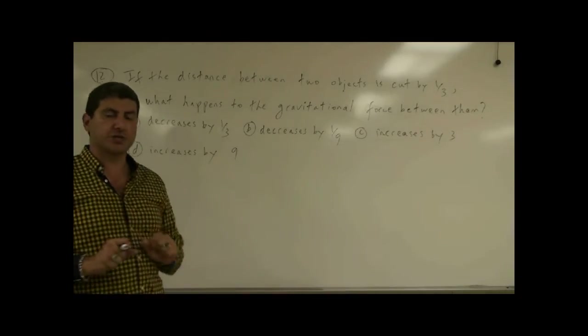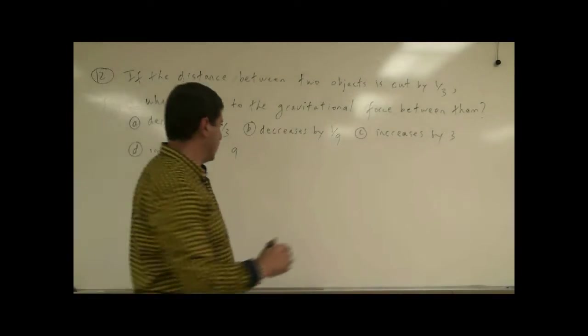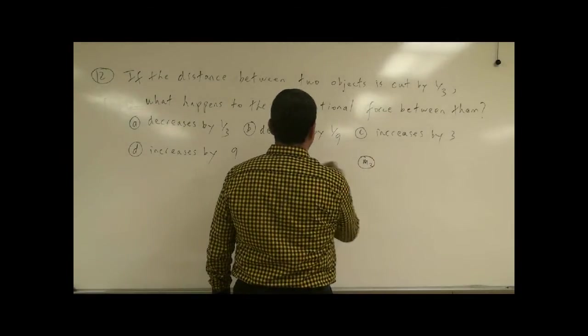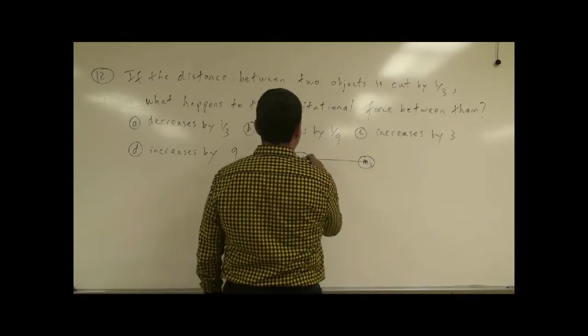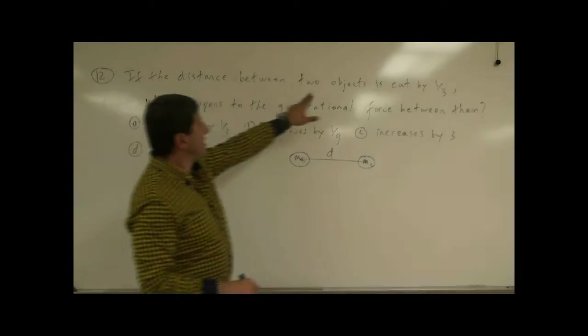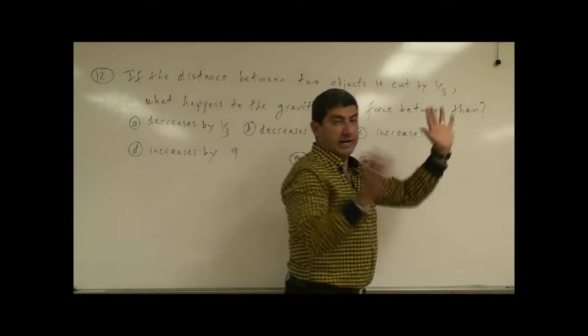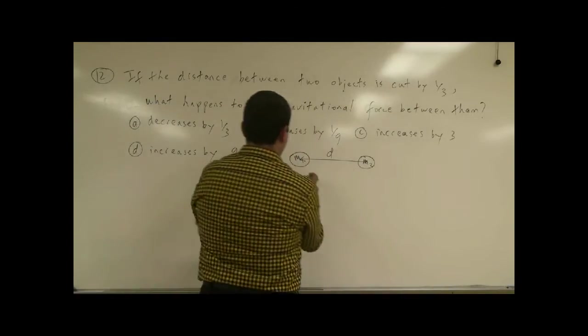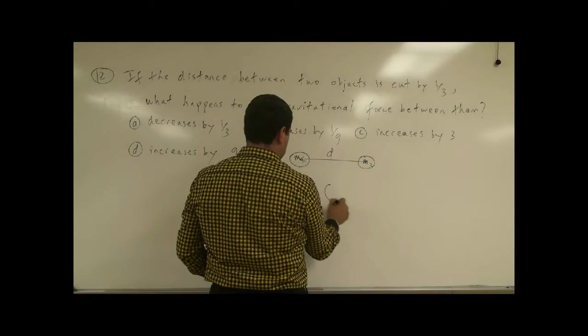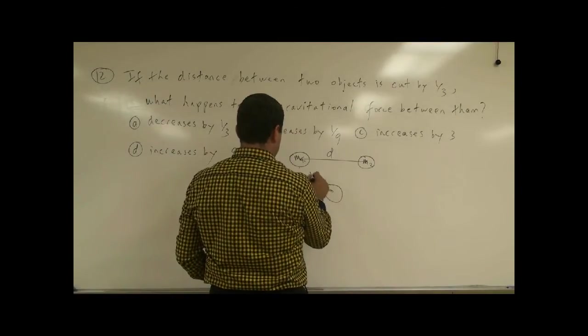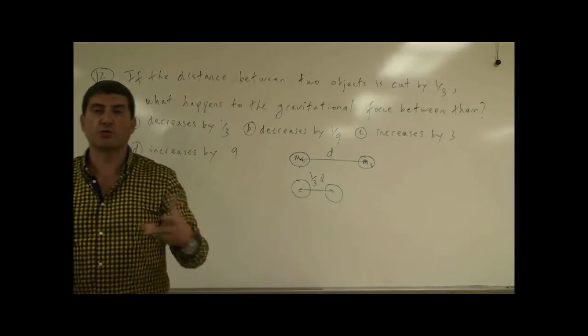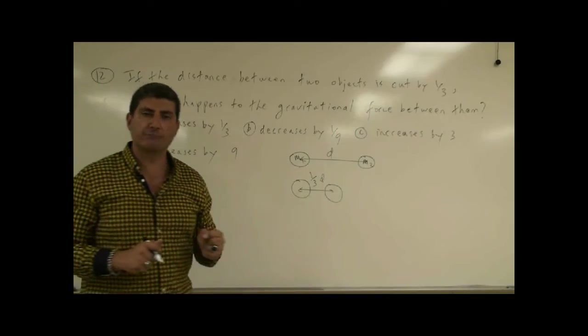So here what's happening is we're going to utilize Newton's law of gravity. We have two objects, mass M1, mass M2, and originally their distance we can call it D. And what are we doing? We are decreasing their distance, we are cutting it by a third. So their distance is going to go, or we can keep this one the same place if we want, but bring them one-third as much closer, so one-third D. But we're keeping their masses the same. What's going to happen to the gravitational force between the two objects?